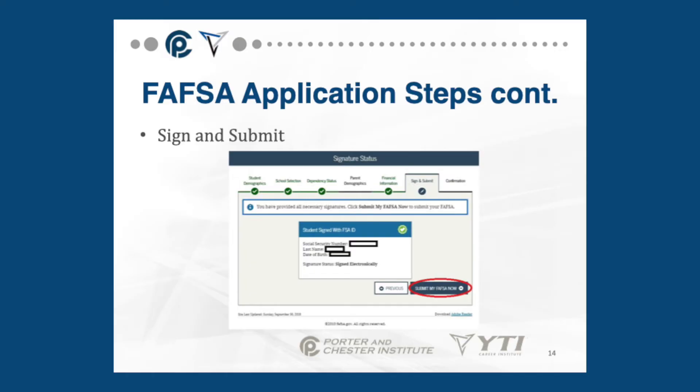Everything you enter must match exactly as it appears on your tax return, so it doesn't always work. But when it does, it's such a time saver and it greatly helps with accuracy, so I strongly encourage you to try to do so. Once you've finished entering all of your information, you're ready to sign and submit your FAFSA. If your parent is also on your FAFSA, they will need to sign with their own FSA ID as well.